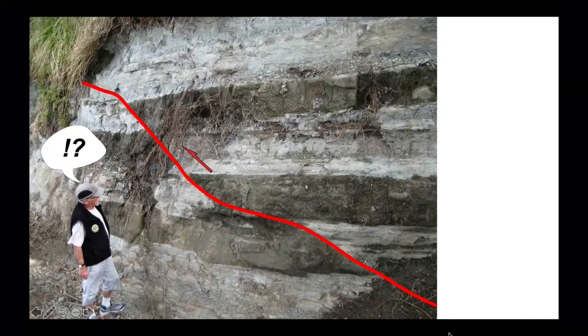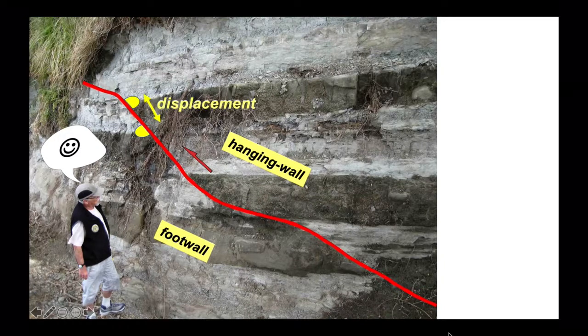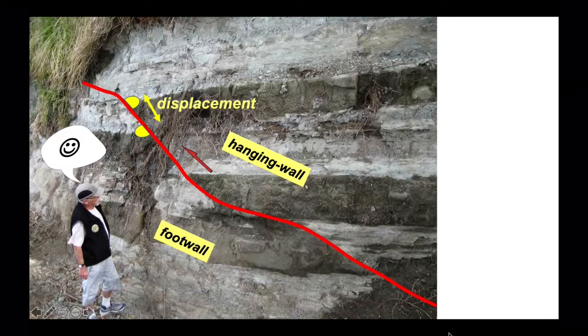So let's go back to New Zealand. There's the hanging wall and foot wall, and there's the displacement of the top of the upper dark horizon measured along the fault plane.